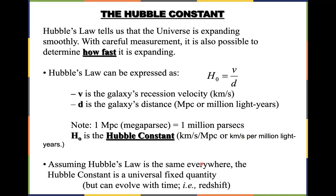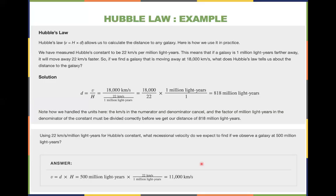Assuming Hubble's Law is the same everywhere, the Hubble constant is a universal fixed quantity — though remember it can evolve with redshift; we assume it is fixed for now. Here are two examples. The Hubble constant is measured as 22 km/s per million light years. This means if a galaxy is 1 million light years further away, it will move away 22 km/s faster.